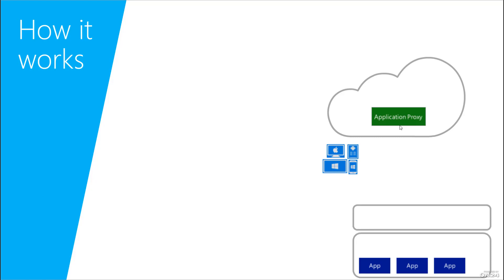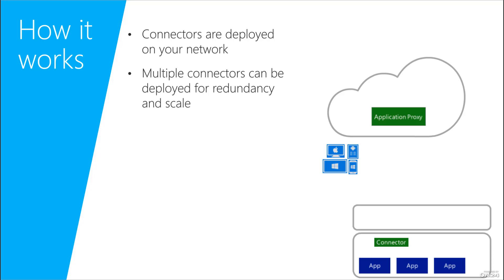You can see that we have on-premises applications and we would like to use the Application Proxy Service in Azure Active Directory. The first thing you have to do is deploy connectors — install connectors on your servers. You can download the connector and install it on the actual web server where the application is located. As soon as you enable Active Directory Application Proxy, you can download and install the connector, and these connectors connect to the Application Proxy Service on Windows Azure. You can install multiple connectors for multiple applications.